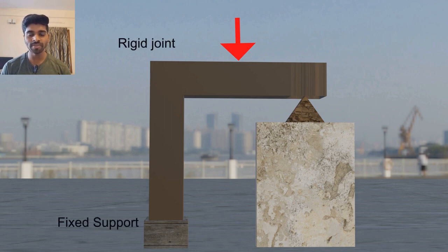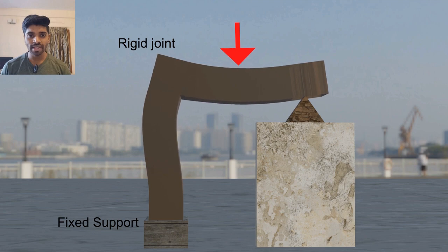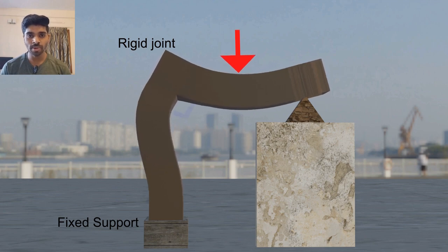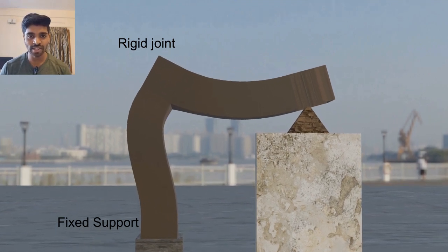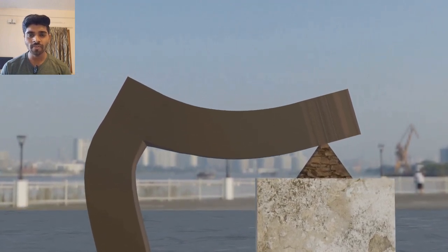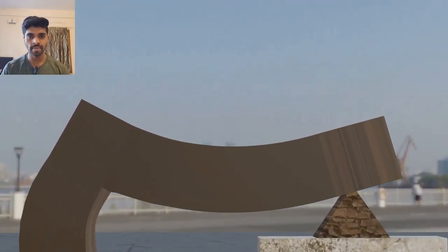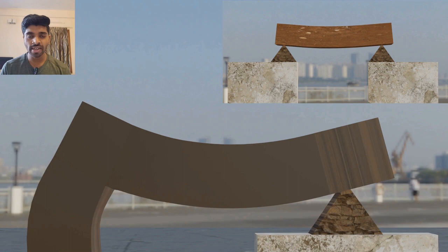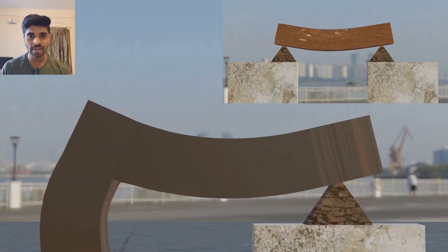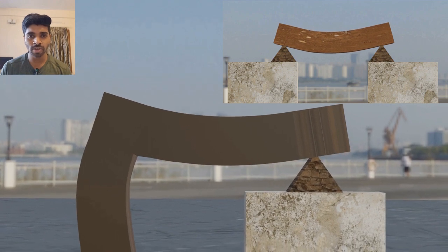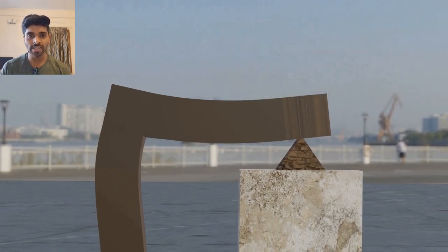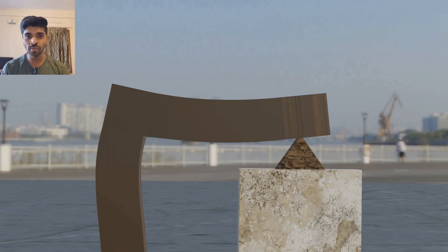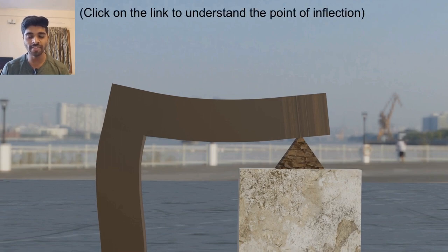Most of you have drawn the deflected shape of this structure by applying two rules: continuity of support and continuity of joint, maintaining the 90-degree angle at the rigid joint. That is correct, but here one minor correction needs to be made. If it were a simply supported beam, this deflected shape would be absolutely correct. However, since the column is also attached with the beam portion, the deflected shape will definitely be affected. If you miss this correction, you won't be able to find the point of inflection in the beam portion.